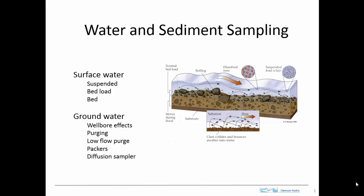Water and sediment sampling have a variety of important applications. We'll look at surface water and groundwater sampling, in particular suspended and bed load samples — sediment moving along with the flow in the stream — as well as samples of the bed material. For groundwater, the wellbore affects concentrations and causes a variety of problems. Methods such as three wellbore volume purging, low-flow purge packers, or diffusion samplers have been developed to mitigate these problems.